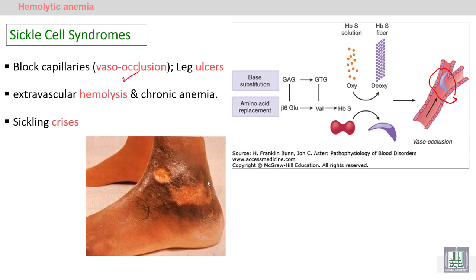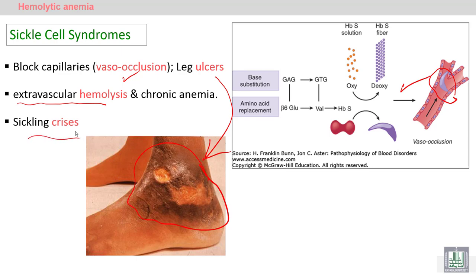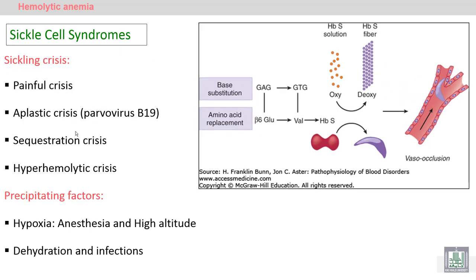Sickling leads to blocking of the microcirculation and capillaries — what's called vaso-occlusion. It leads to deprivation of some parts from blood supply, leading to leg ulcers. In addition, the abnormal sickle cells are rigid, so extravascular destruction will occur, causing anemia. Sickling crisis may be a painful crisis — attacks of excessive pain due to inflammatory changes.